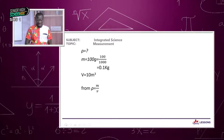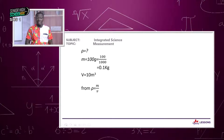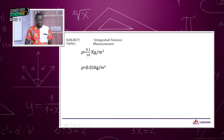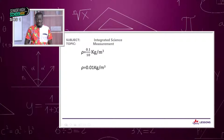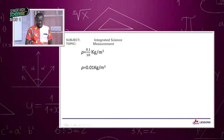The volume was given as 10 meters cubed. So we can find the density using density equals mass over volume, or rho equals M over V. Since the mass is 0.1, we divide 0.1 by 10. The density equals 0.1 divided by 10, giving 0.01 kilograms per meter cubed. In science, you must include the unit to score points.